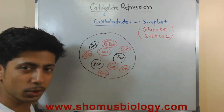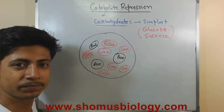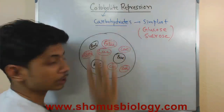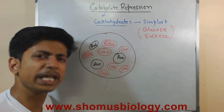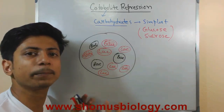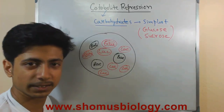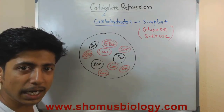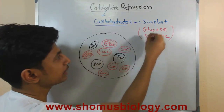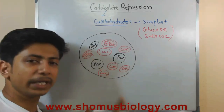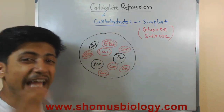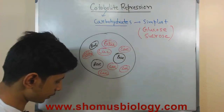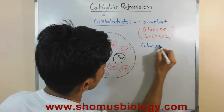Glucose represses the metabolism and uptake of lactose by bacteria. If glucose is present in high concentration, it will never allow other complex carbohydrates to be taken up and metabolized by the bacterial cell. This is called catabolite repression. The molecules that show catabolite repression are called catabolites. Historically, when glucose was first discovered to do this, the process was termed the glucose effect.